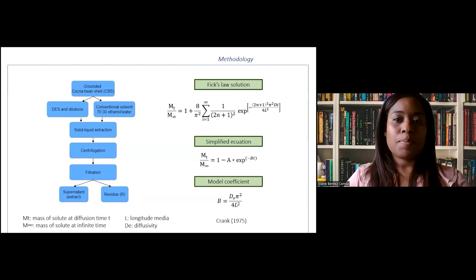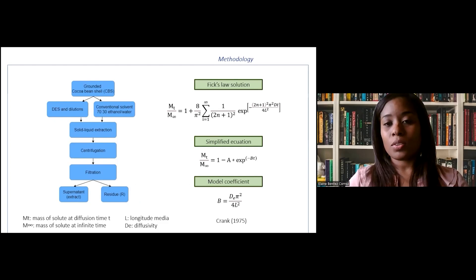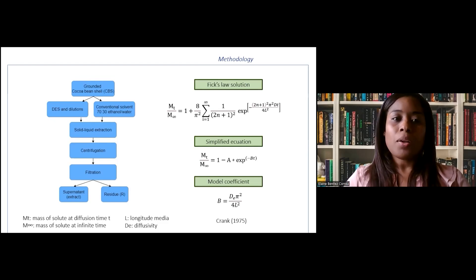A reference sample was treated under the same conditions, but in this case ethanol solution was used as a conventional solvent. After centrifugation and filtration, both supernatant and residue were analyzed. The model presented in the slide was used to simulate experimental data of total phenolic content, and the coefficients A and B were determined by non-linear correlations.